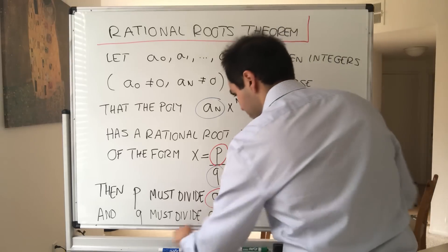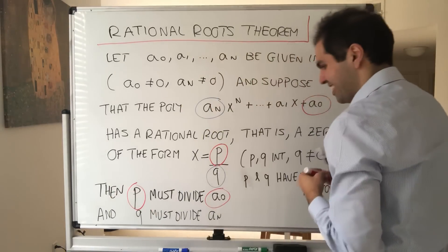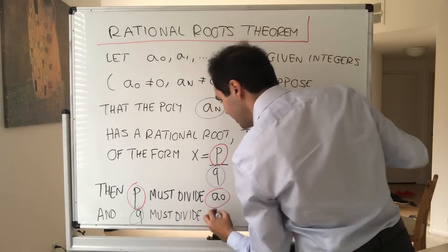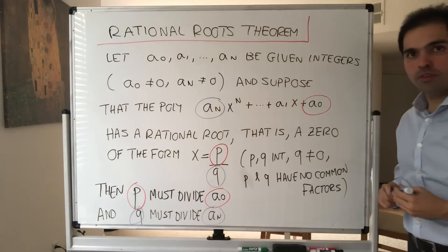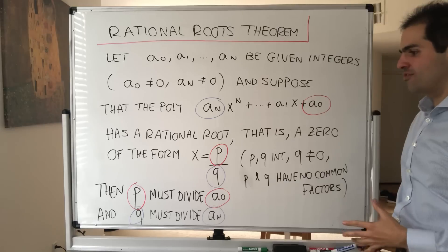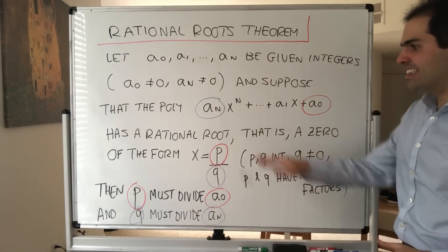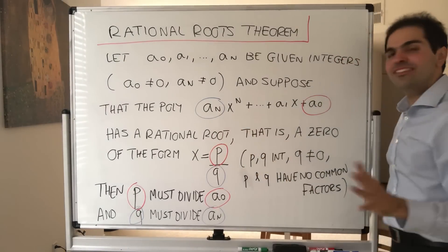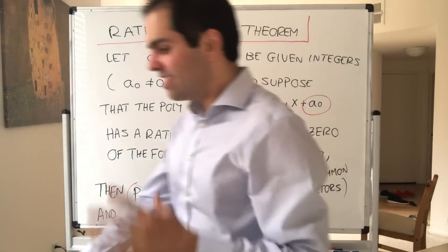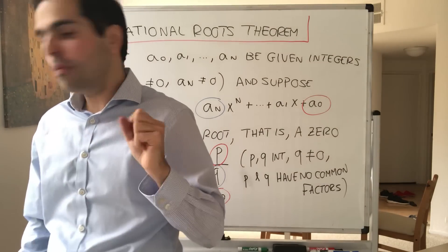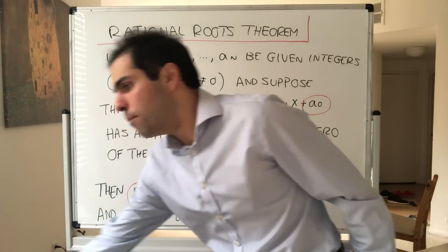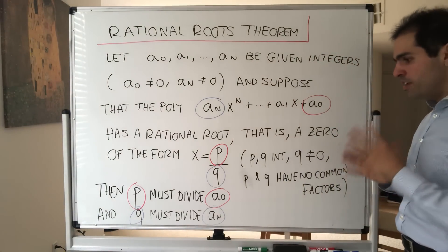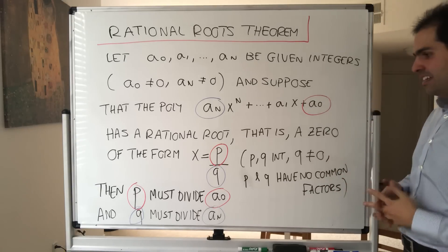So again, let me reiterate. Suppose you have this given polynomial, and suppose it has a rational root. Suppose magically it has a root that's a fraction. Then this theorem tells you that the numerator has to divide the constant term and the denominator has to divide the leading term. It's a structure theorem. It tells you something about the structure of roots of polynomials.